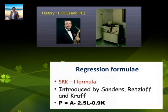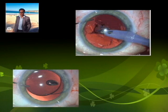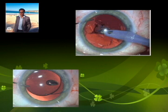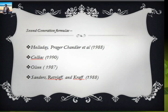As phacoemulsification advanced, anterior chamber IOLs faded and implantation of the IOL in the capsular bag became the norm. Surgeons recognized that the IOL position in the bag was not always predictable due to bag contraction. The postoperative anterior chamber depth — the concept of effective lens position — was critical to understand. This gave rise to the concept of a constant optimizer, a constant within the formula.